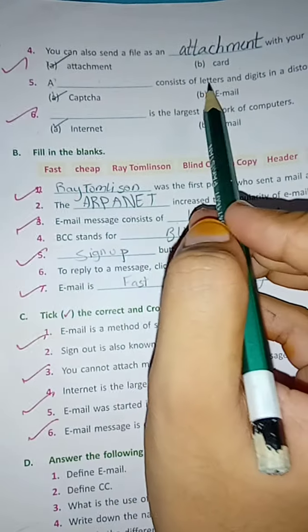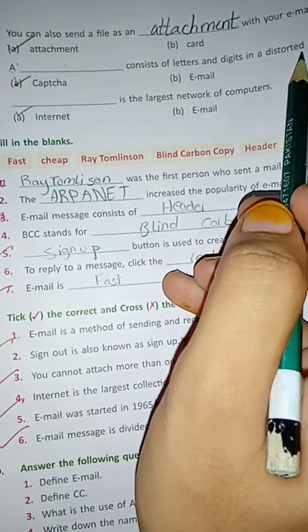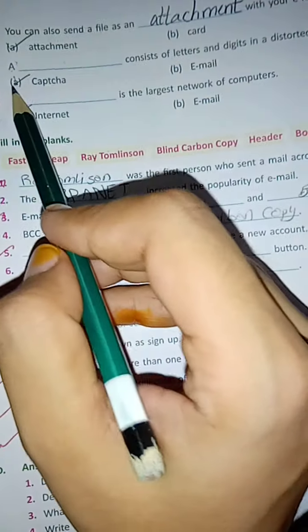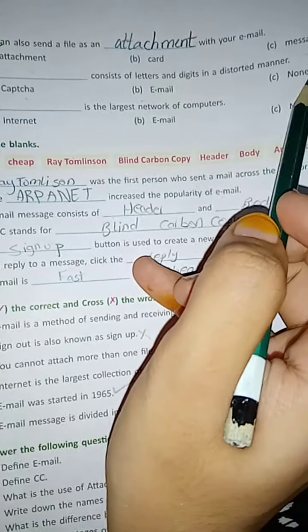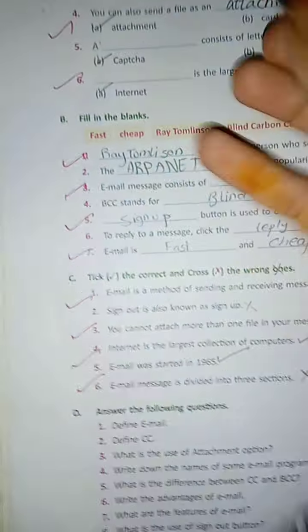Next, a dash consists of letters and digits in a distorted manner. Option A: captcha, Option B: email, Option C: none of these. And the answer is option A, captcha.